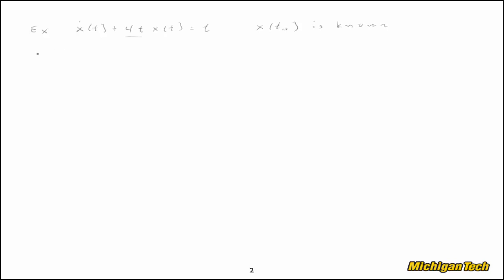Let's say that magically the integrating factor is equal to alpha·e^(2t²). We'll see how to get that later. The other thing we need is m(t₀), which equals alpha·e^(2t₀²). The right-hand side integral from the solution is the integral from t₀ to t of m(τ)·u(τ) dτ.